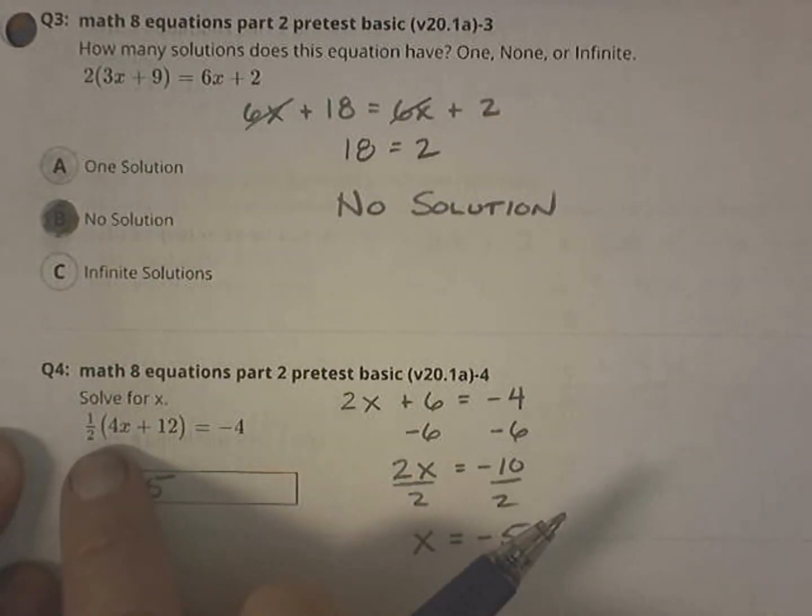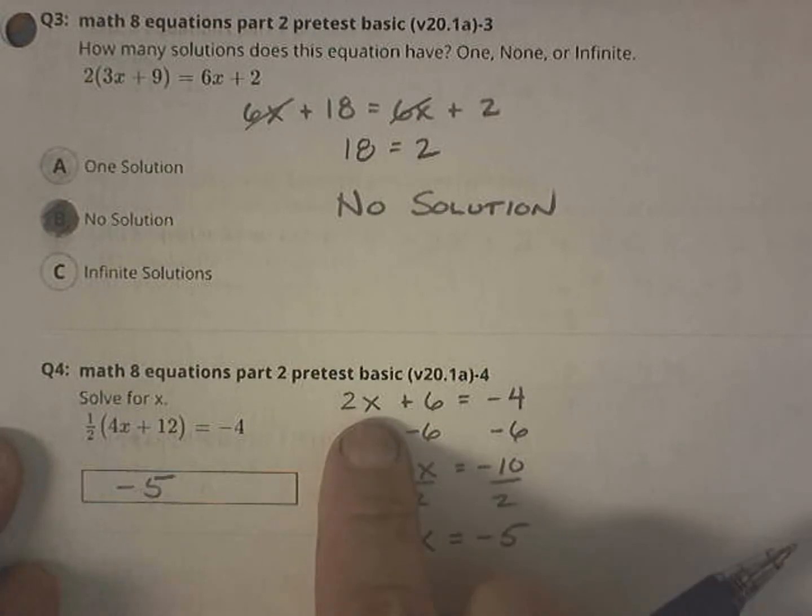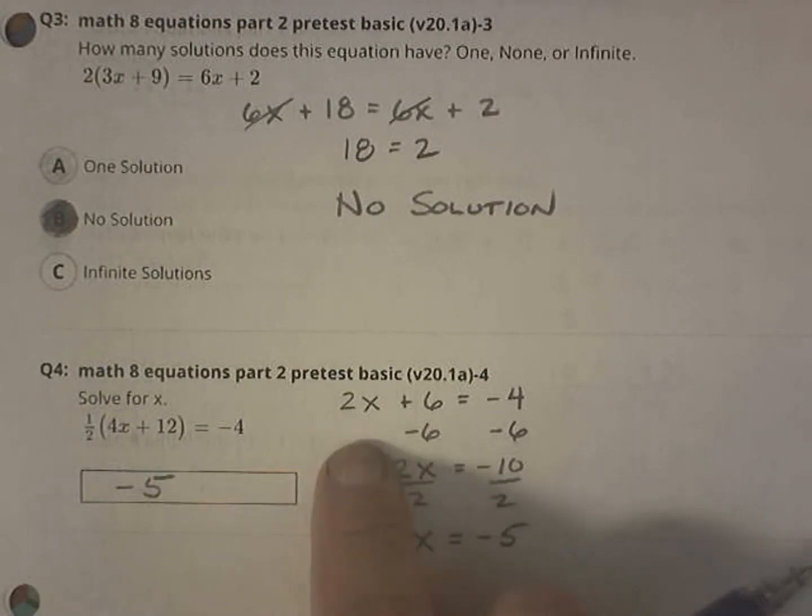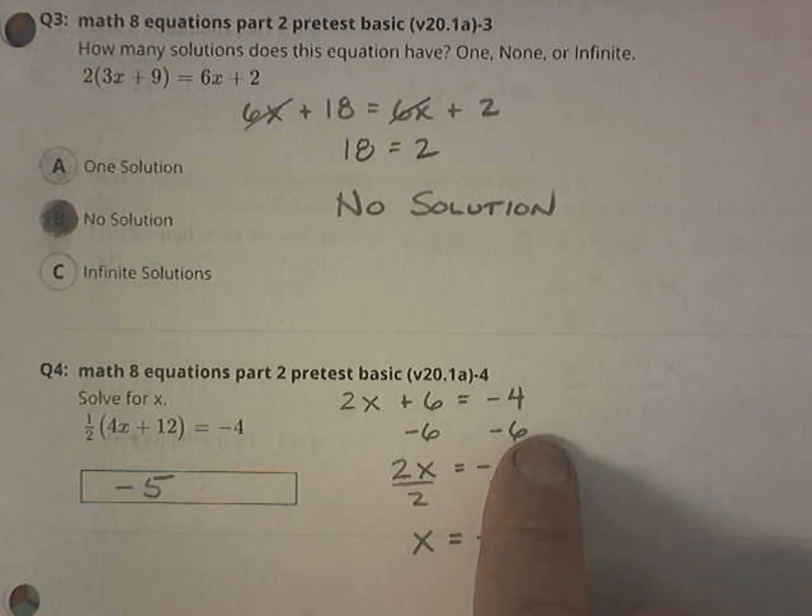I'm going to start by distributing that one-half. So half of 4 is 2, and half of 12 is 6. So I have 2x plus 6 equals negative 4. Subtracting 6 from both sides gives me a negative 10 over here. Dividing both sides by 2 gives me a negative 5.